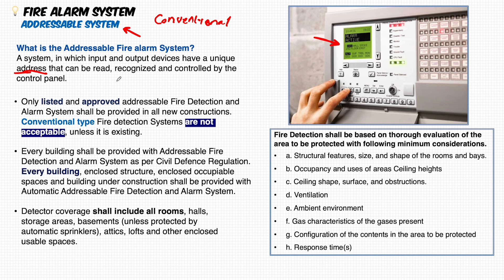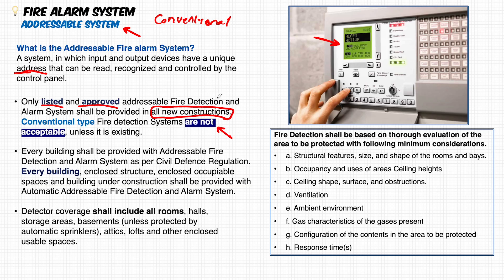What does the UAE regulation say about addressable fire alarm systems? Only listed and approved addressable fire detection and alarm systems shall be provided in all new constructions. Any new building after the UAE Fire Life Safety Code 2018 shall use addressable fire alarm systems — the conventional type is not acceptable for new constructions.